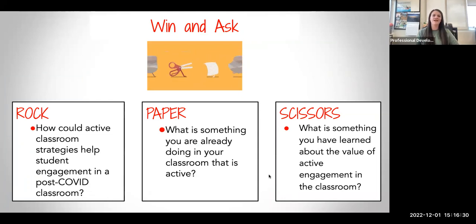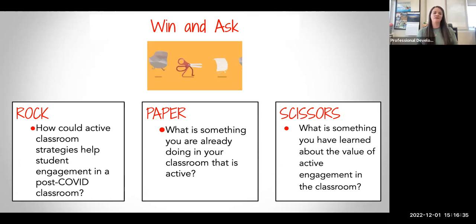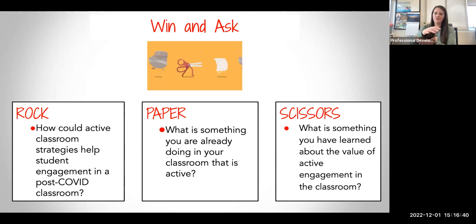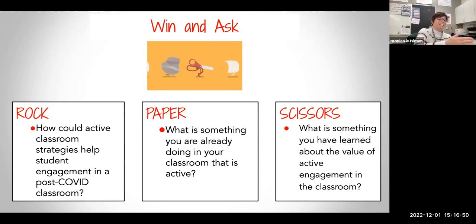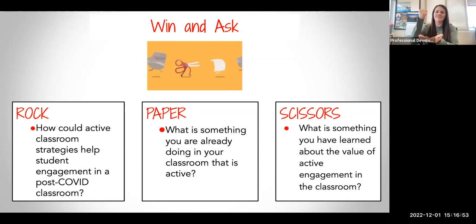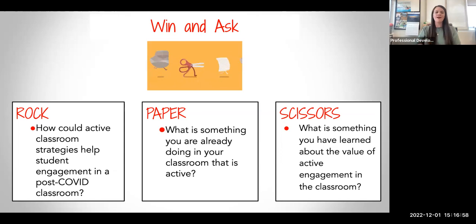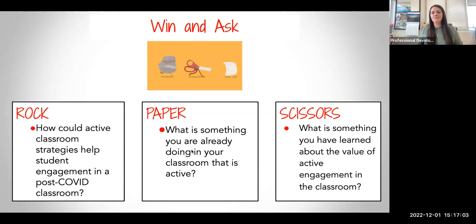This next activity is called 'Win and Ask.' You have students play rock-paper-scissors. Rock, paper, scissors — go. So say paper covers rock. If I win with paper, I would ask you: 'What is something you are already doing in your classroom that is active?' [Participant:] In my classroom, we do a lot of labs so they get up and move around. We have days where they do demonstrations and they have to get up and get their own supplies. And sometimes, like yesterday, one of my classes was falling asleep so I made them stand up and jump around.